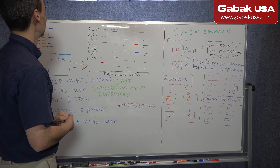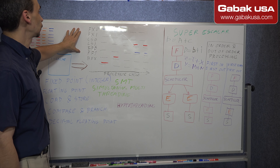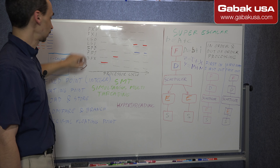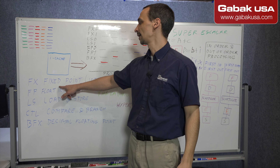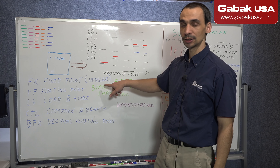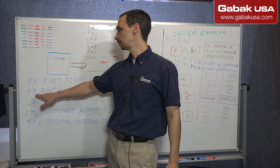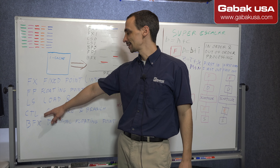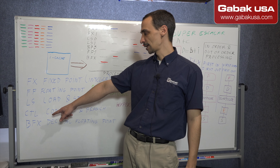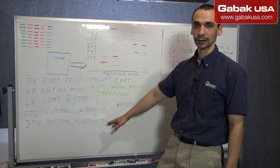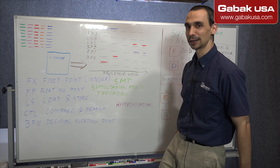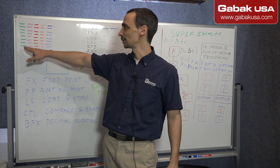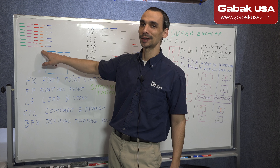All of this is basically the CPU. Here we have the stages. FX is fixed point — this is the integer. Here we have FP, floating point, then we have load and store (LS), then CTL which is compare and branch, and then BFX, decimal floating point. Usually this is for currencies and more complicated instructions. So in this case we have the program with green, pink, red, orange, and blue.